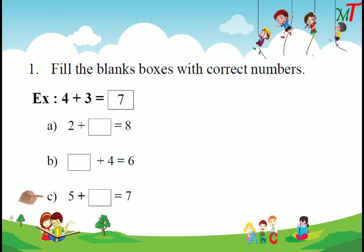Next one: 5 plus dash equals 7. Here, 5 means 5 dots. We add some more dots up to 7, so 6 and 7. How many dots did we add? 2. So 5 plus 2 equals 7.